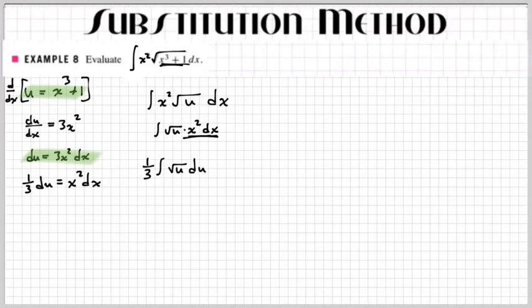So I just took this out. Oops. Yeah, I took that out. I took x squared dx out and I put in one third du. See, one third du. Now I just integrate like usual. And so if this was like a usual problem, hopefully you know how to do this already.